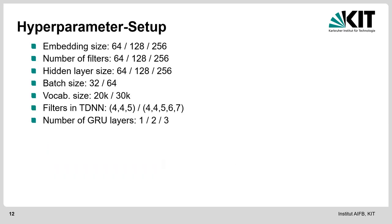We varied different hyperparameters: embedding size, number of filters, hidden layer size, batch size, vocabulary size, the filters in the TDNN, and the number of GRU layers. Note that Ebisu and Fang, the original paper, had no different setups — they just used one setup, at least as published. So it is interesting to see what the effect of having different hyperparameter setups is.